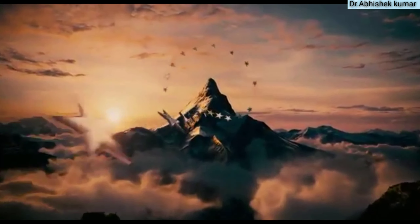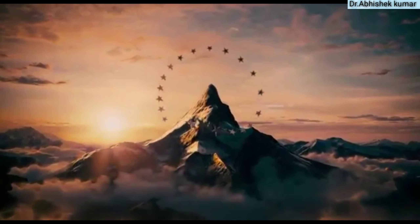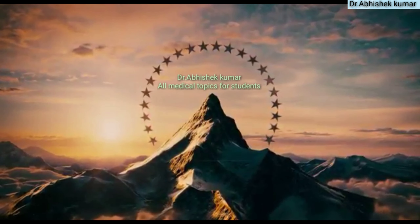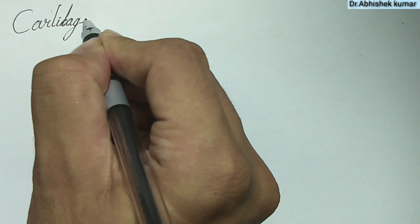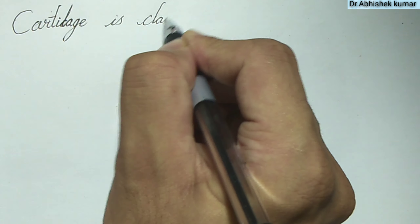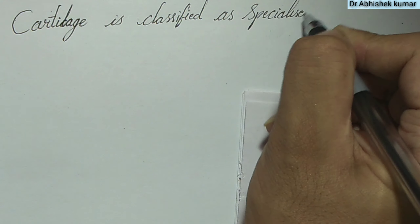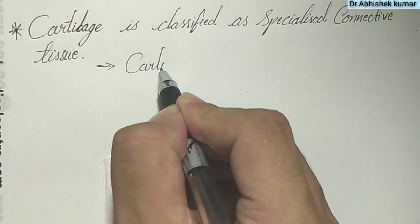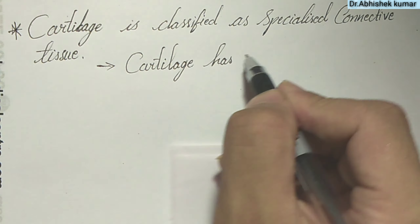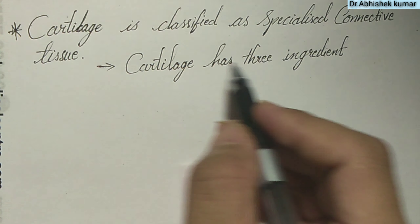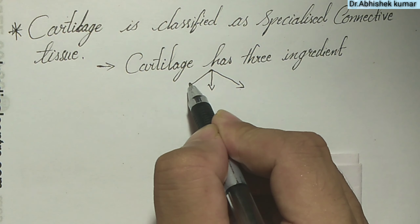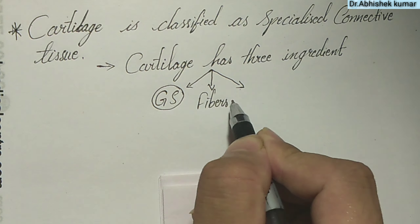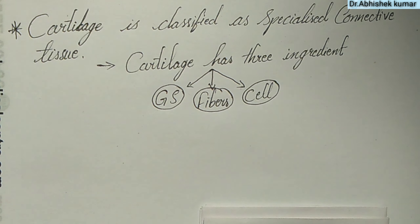Namaste everyone, welcome to our YouTube channel Dr. Visek Kumar. Today we are going to learn about the histology of hyaline cartilage. Cartilage is classified as a specialized connective tissue. Cartilage has three ingredients just like any other tissue: ground substance, fibers, and cells.